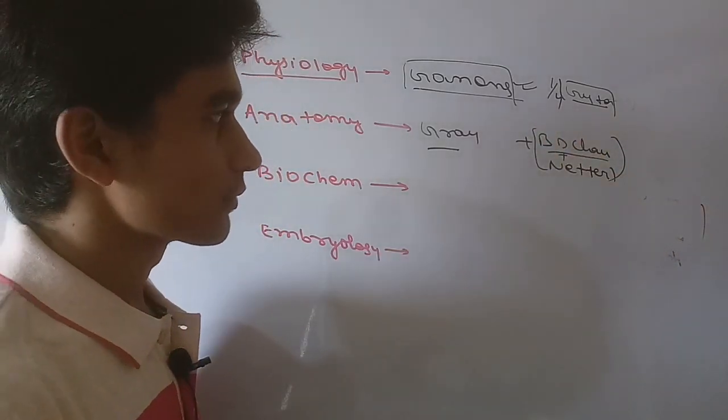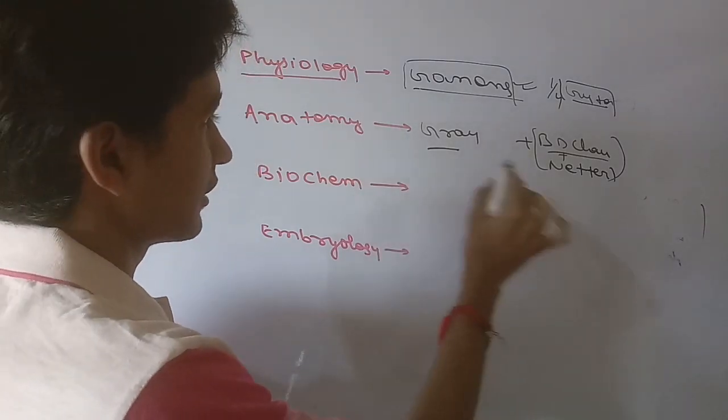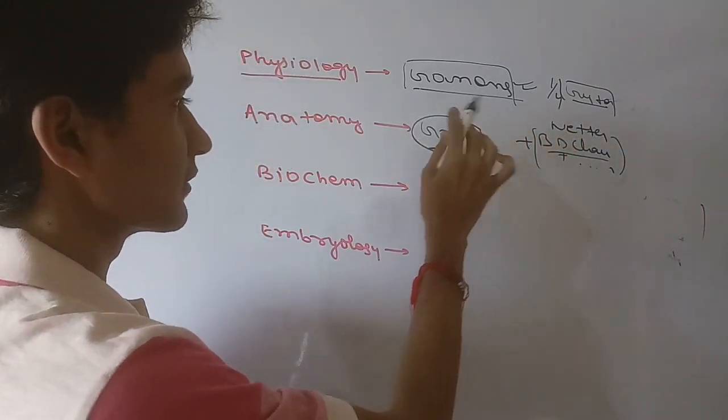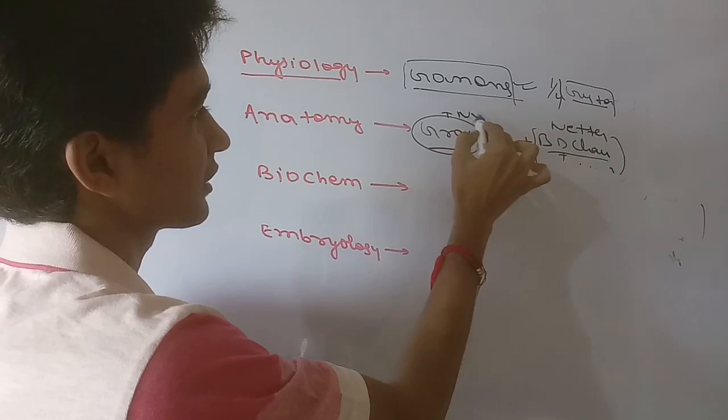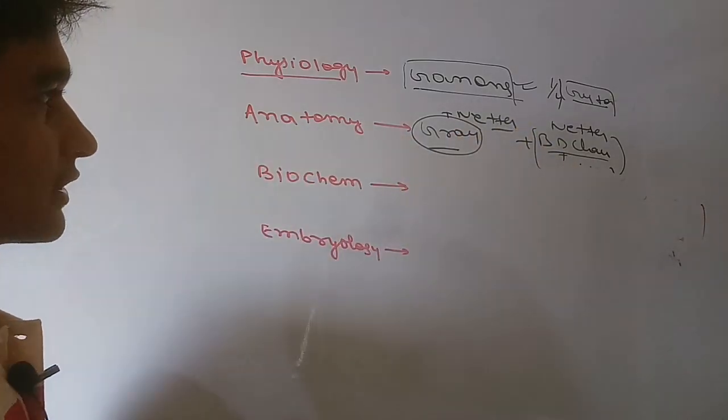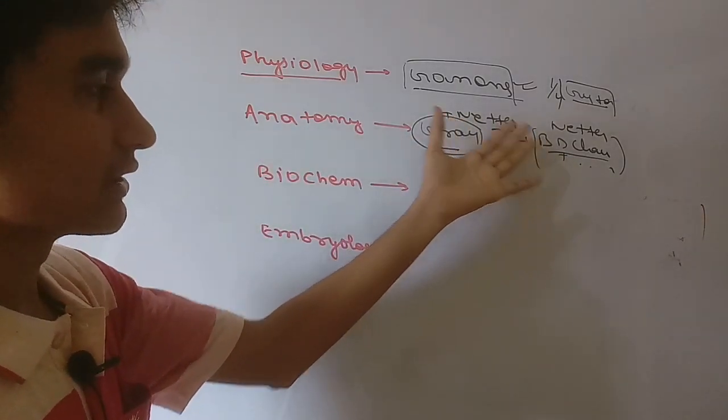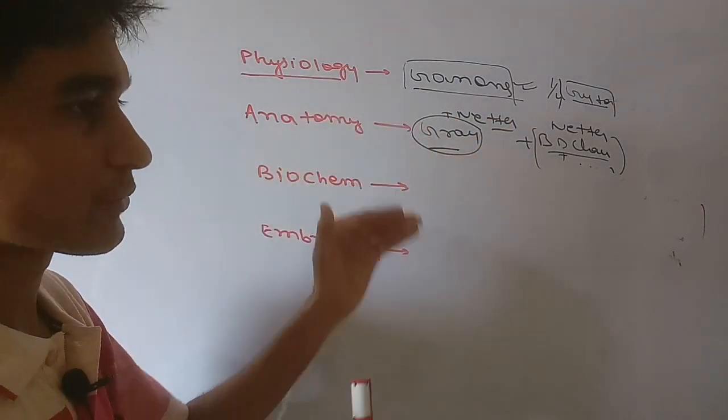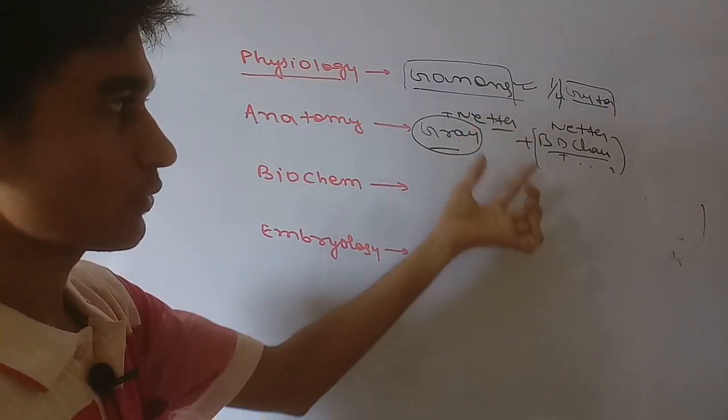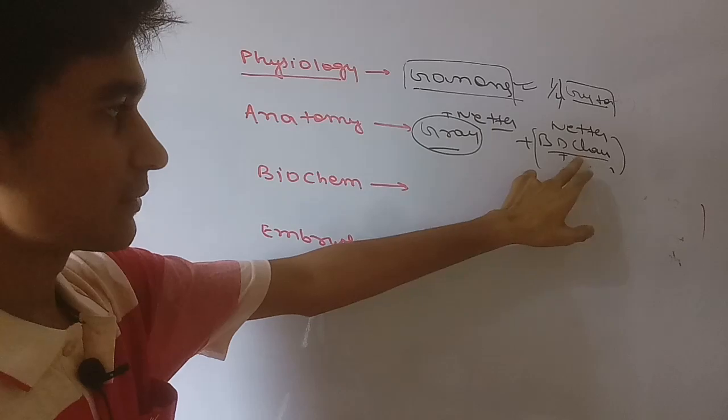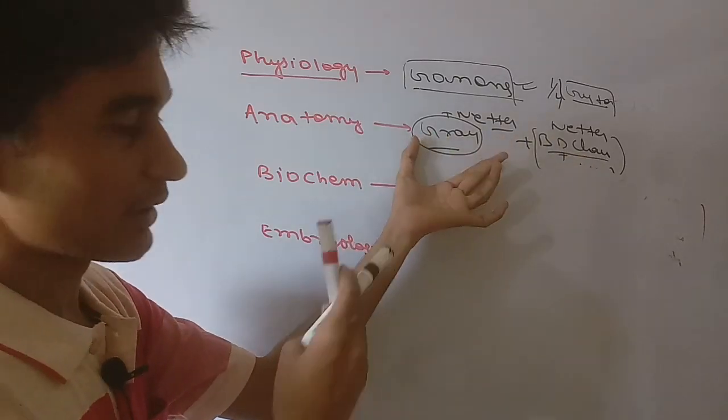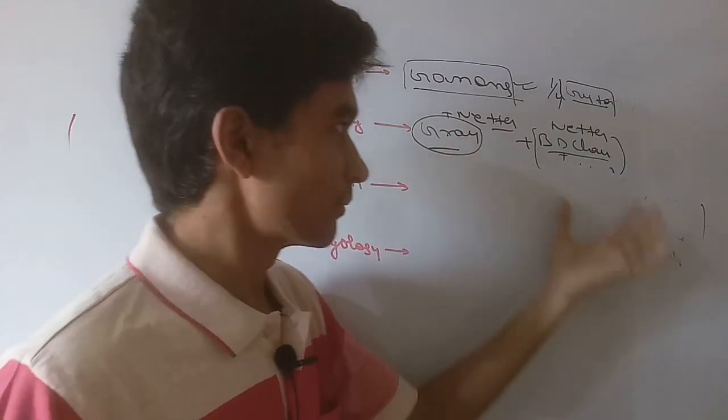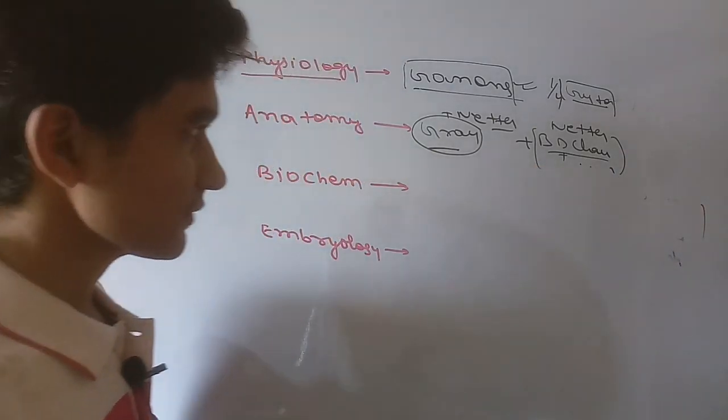BD Chaurasia is also good for your semester examination. But with BD Chaurasia you must buy Netter, and if you are going for Gray, then along with Gray you must buy Netter. Netter is best for your anatomy. If you have Netter, you will not face problems in your anatomy part. BD Chaurasia is also good, and maximum students, 90 percent students, prefer BD Chaurasia. This book is very helpful in your semester examination.